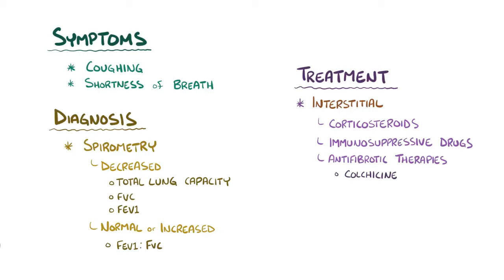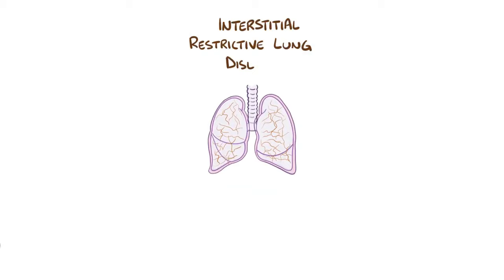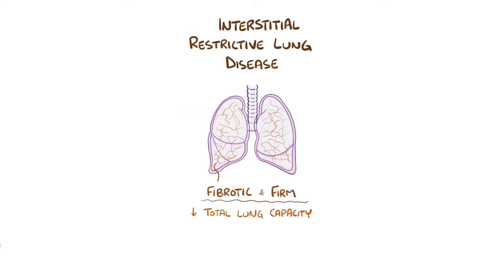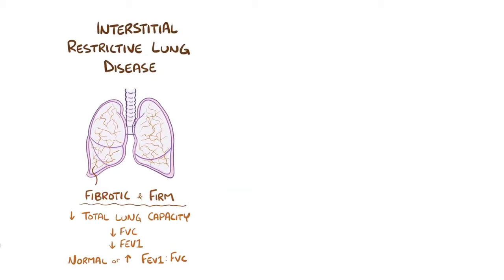Management of extra-pulmonary causes of restrictive lung disease depends on the underlying condition. To recap: interstitial restrictive lung disease happens when the lung tissue becomes fibrotic and firm, which reduces the total lung capacity, forced vital capacity, and forced expiratory volume in one second, but usually results in an increased or normal FEV1 to FVC ratio. Diagnosis is made based on spirometry and chest imaging, and corticosteroids are the first-line treatment.